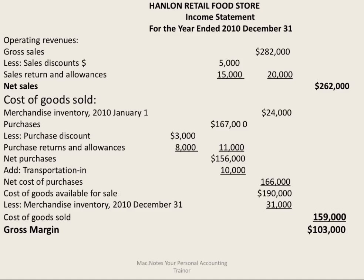Here is a retail store income statement for the year 2012. Operating revenues is the first section; cost of goods sold is the second section. We begin with total gross sales of $282,000. Some customers took discounts and some returned items or wanted allowances, which we tracked in contra sales accounts, so we reduce gross sales by $20,000 to arrive at net sales.